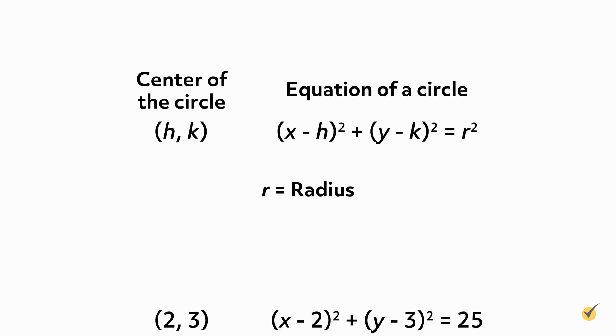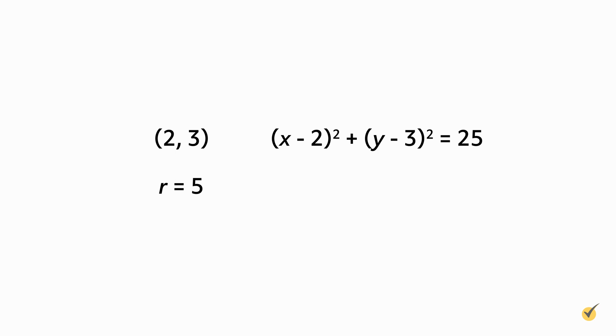So if we have a circle with a center at the point (2, 3) and a radius of 5, our equation would look like this: x minus 2 squared plus y minus 3 squared equals 25. We simply plug in the values for h and k and then square the radius for the right side of the equation.